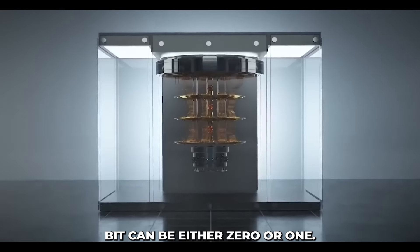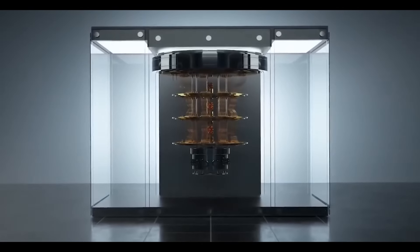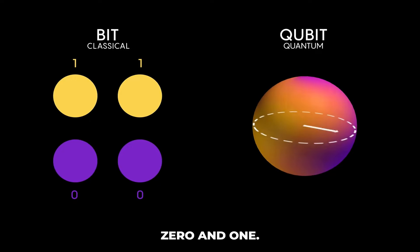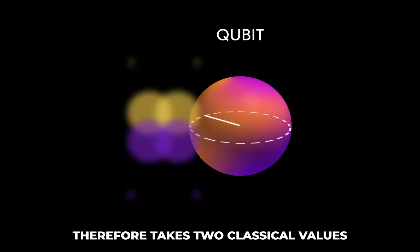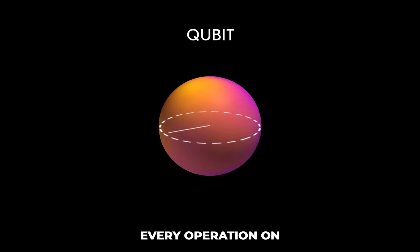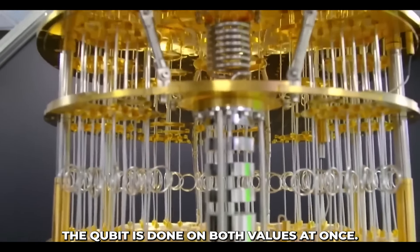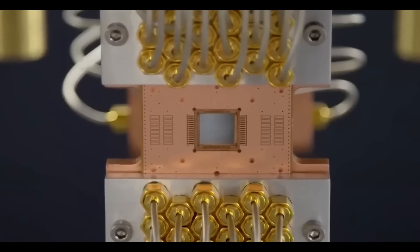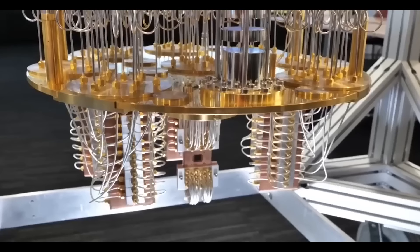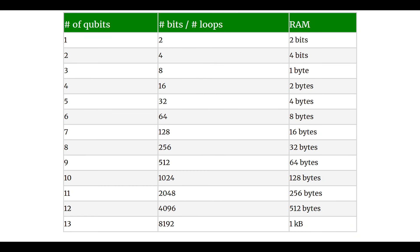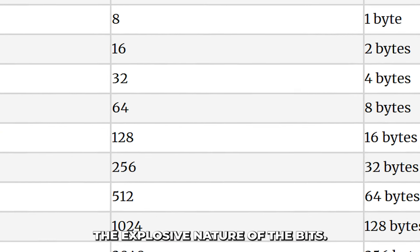A classical bit can be either 0 or 1. A quantum bit, or qubit, is a superposition of 0 and 1. A single qubit therefore takes two classical values at once, and every operation on the qubit is done on both values at once. Here is a table giving us a comparison between classical and quantum bits at different scales.